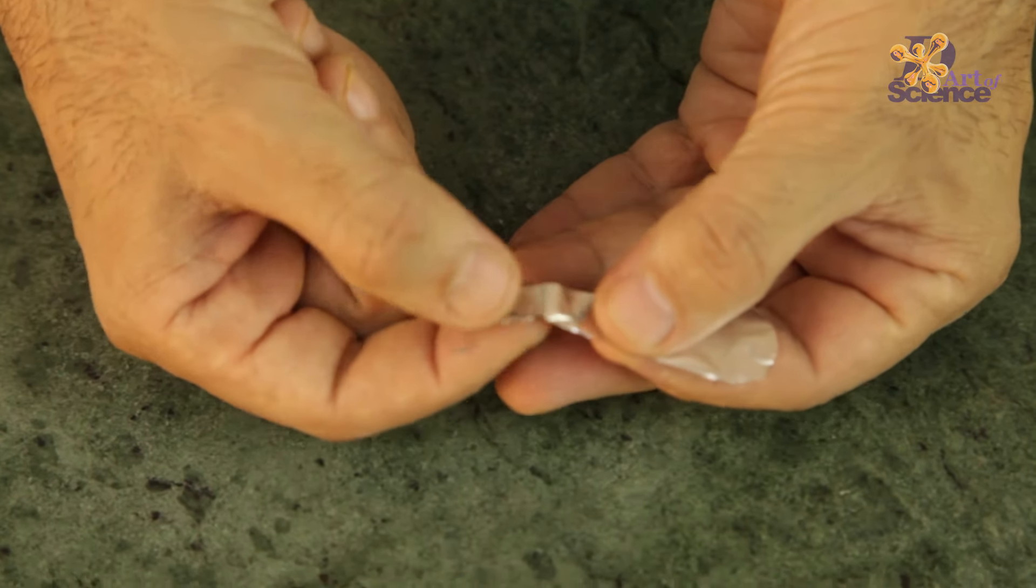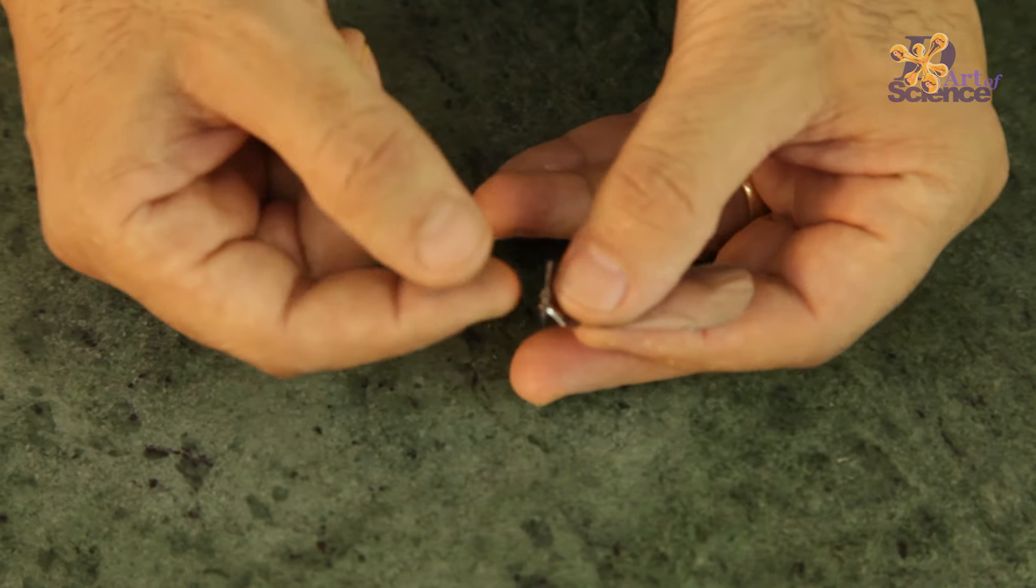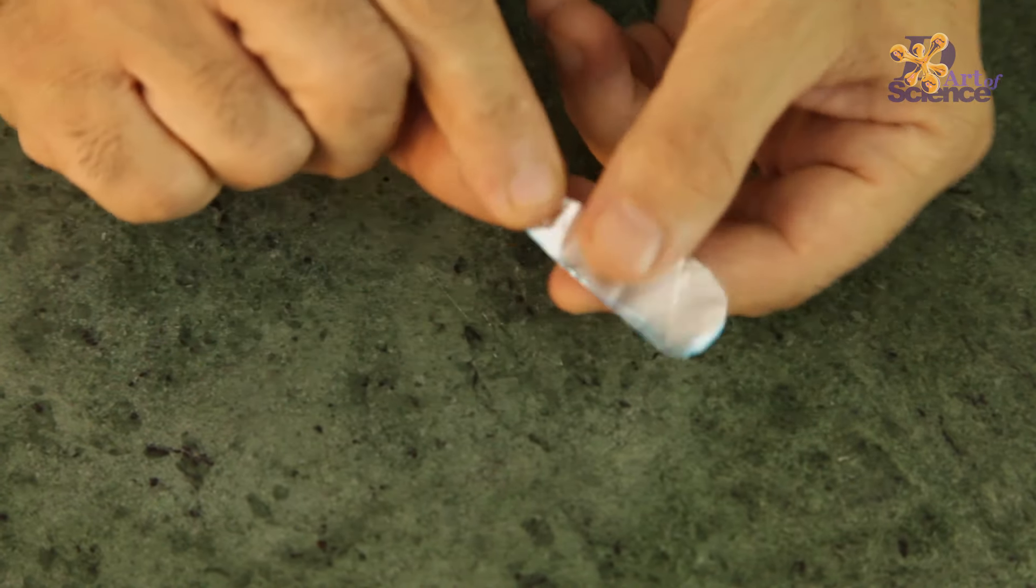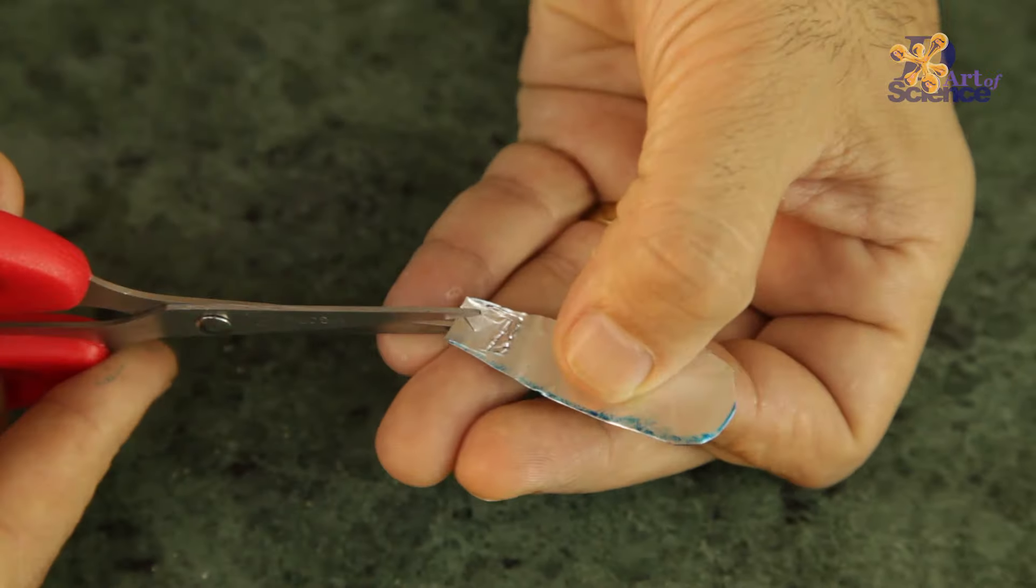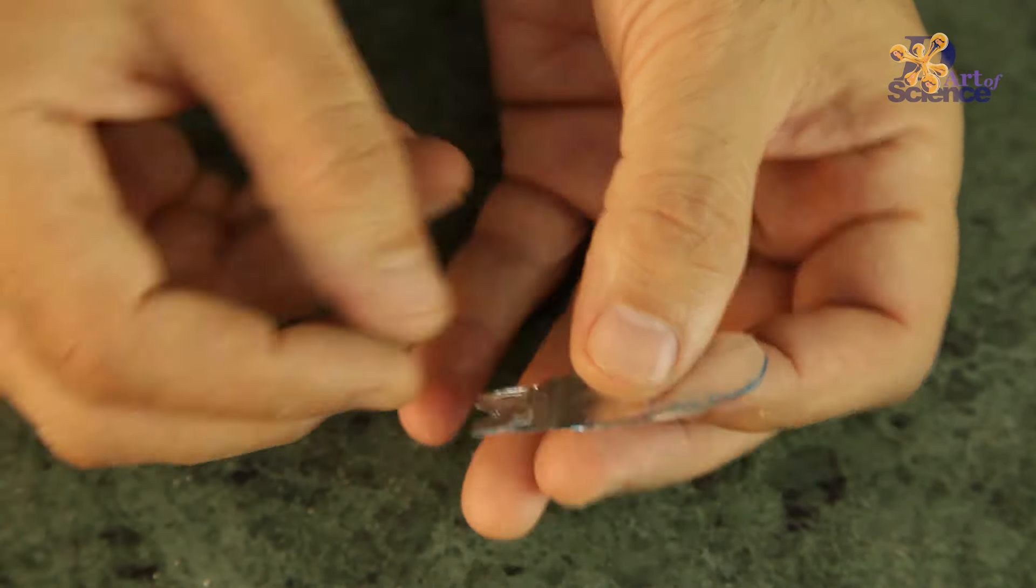Now we need to make a hole on the thinner end of both the leaves. The simplest way to do that is to bend it and make two cuts as shown and the hole is made.